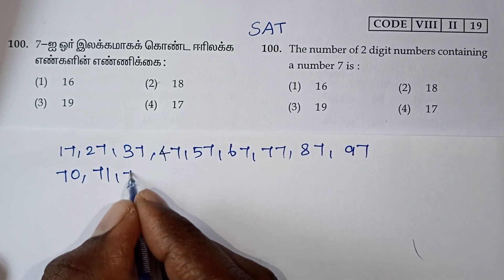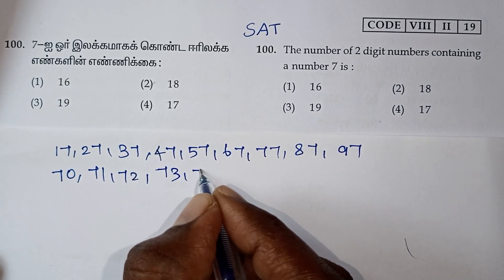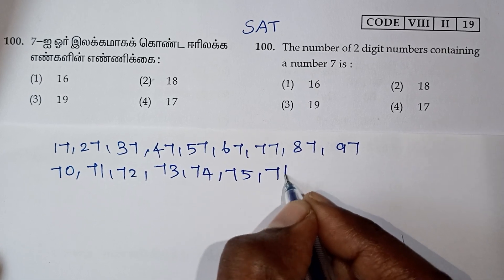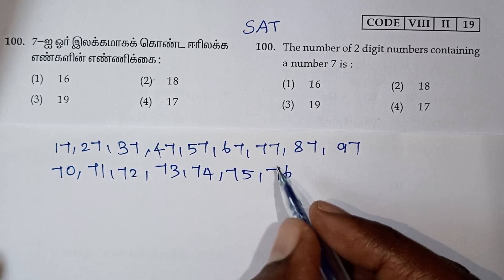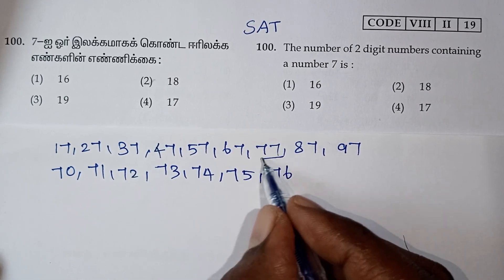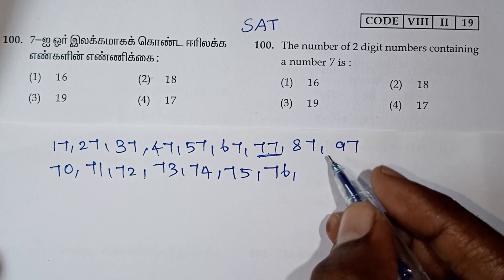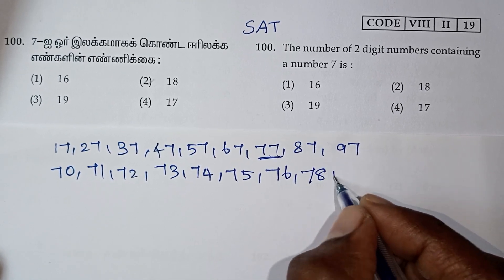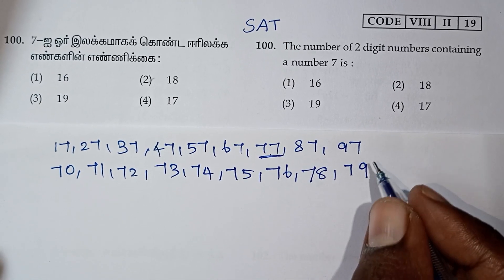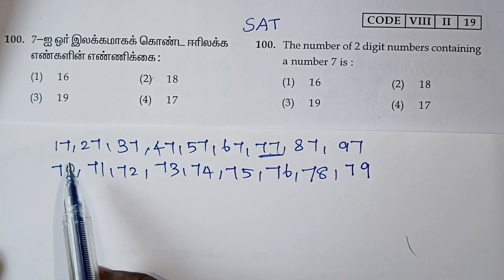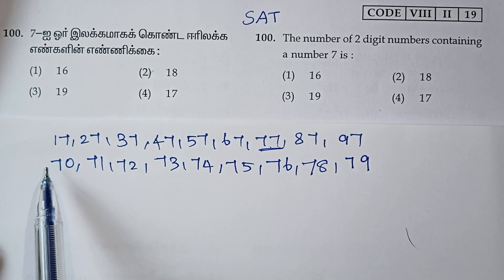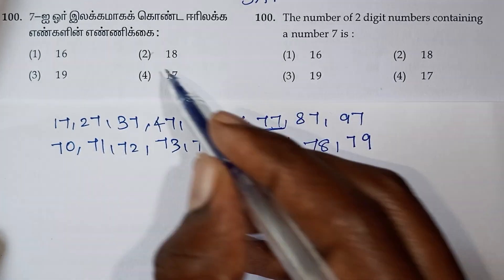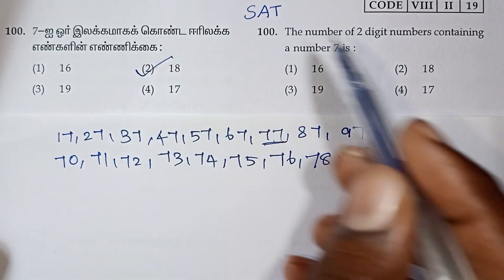Then numbers with 7 in the tens place: 71, 72, 73, 74, 75, 76, 77, 78, 79. But 77 is already counted once, so we add it once more. The total is 9 plus 9 equals 18. So 18 is the correct answer.